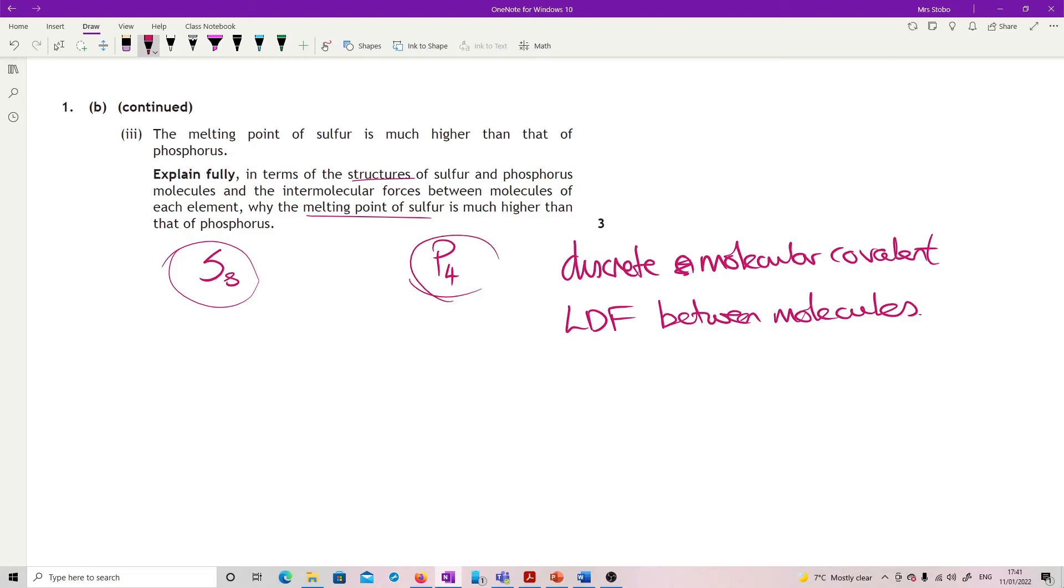What we have here is S8. If I look for electrons, I've got eight times the number of electrons in a sulfur, so I have 128 electrons involved in establishing the associations for LDFs. In phosphorus however, I only have 60. You need to explain that the size of the actual structure of sulfur is much larger, eight rather than four, which means it has a much larger number of electrons, which means you have a much larger number of associations which are your LDFs, and that's it.